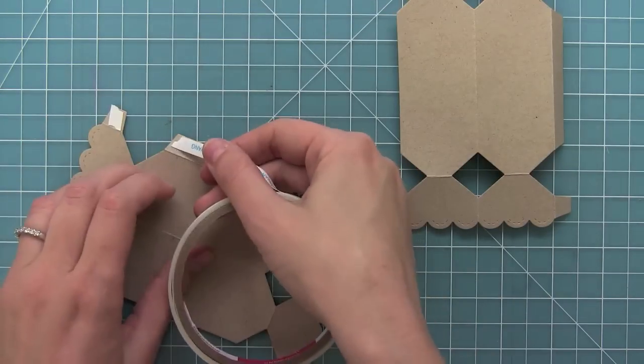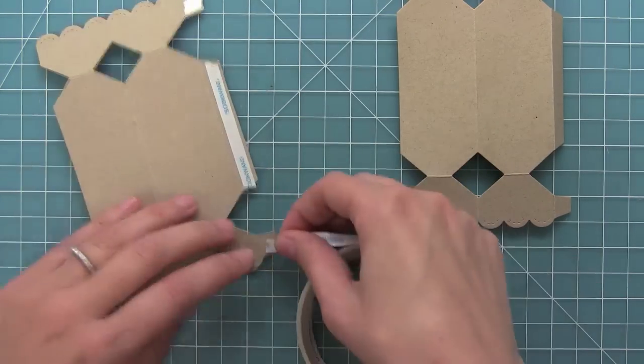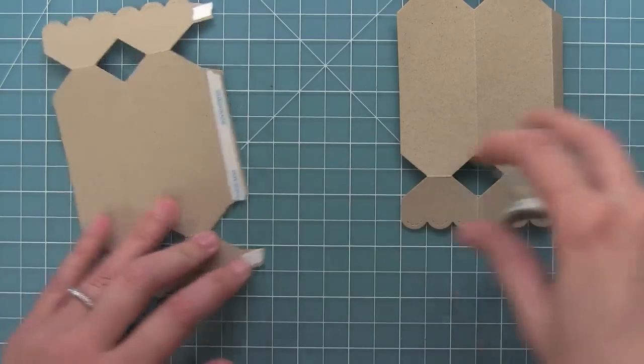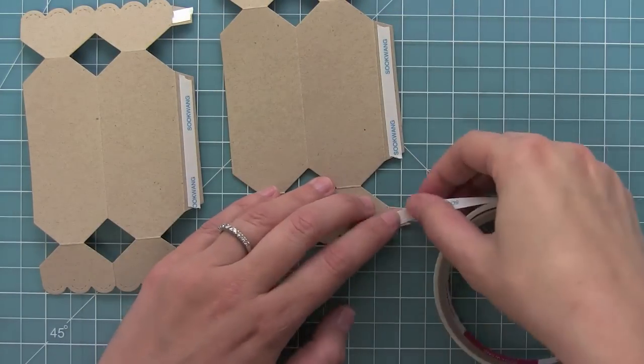Now it's time to add the adhesive. You want to make sure that you use really strong adhesive, and you're going to add that adhesive to all of the tabs on both of your die cut pieces.